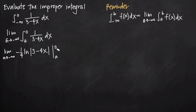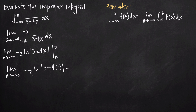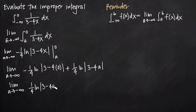Before taking the limit, we evaluate over the interval a to 0. We get the limit as a approaches negative infinity of: negative one-fourth times the natural log of the absolute value of 3 minus 4 times 0 (plugging in the upper limit), minus negative one-fourth times the natural log of the absolute value of 3 minus 4a (plugging in a). We simplify by leading with the positive term: one-fourth times natural log of the absolute value of 3 minus 4a, minus one-fourth times natural log of 3 — since 4 times 0 is 0, and 3 is positive so no absolute value is needed.